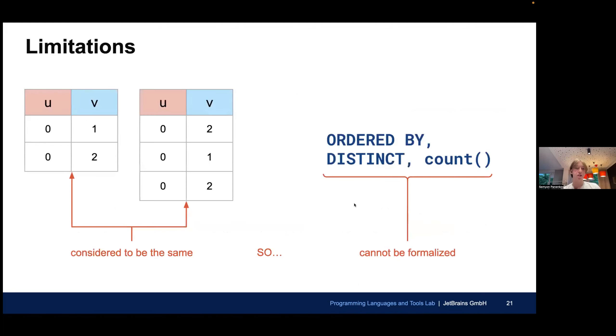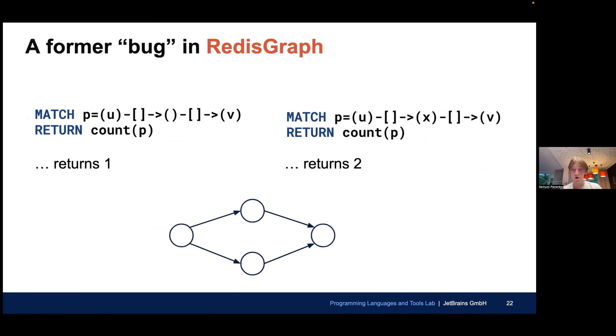However, there are some limitations in our work. The main one is that we interpret tables as sets of records. Therefore, we don't account for order or number of repetitions of records. And as you can see on the slide, these two tables are considered the same. This implies, practically, that we cannot formalize keywords and aggregating functions like ordered by distinct and count, because the result, after applying those operations, it doesn't differ formally from not applying them. And there is a practical implication of that. We cannot show some things.